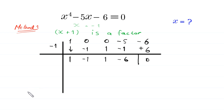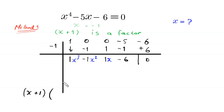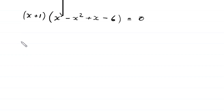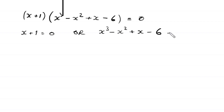So we get one factor x plus 1, and the other factor: this 1 is for x cubed, negative 1 is for x squared, plus 1 is for x, and negative 6 is the constant. So the other factor is x cubed minus x squared plus x minus 6, giving us (x+1)(x³ - x² + x - 6) = 0.